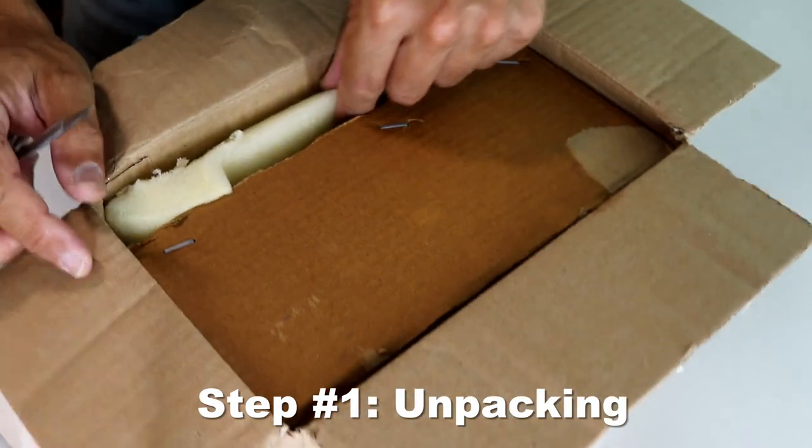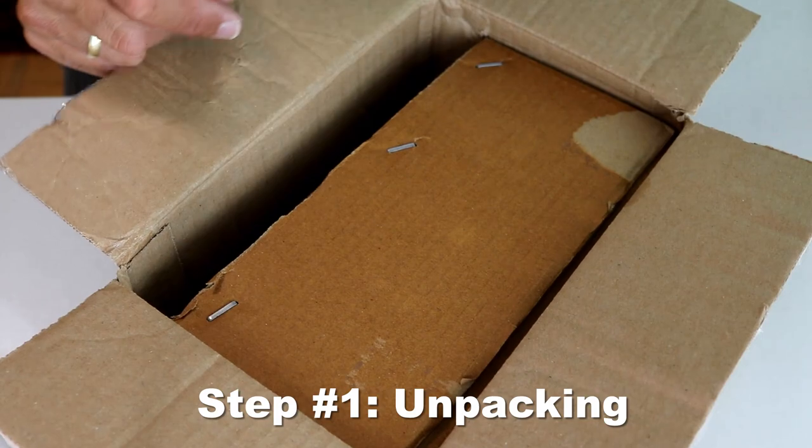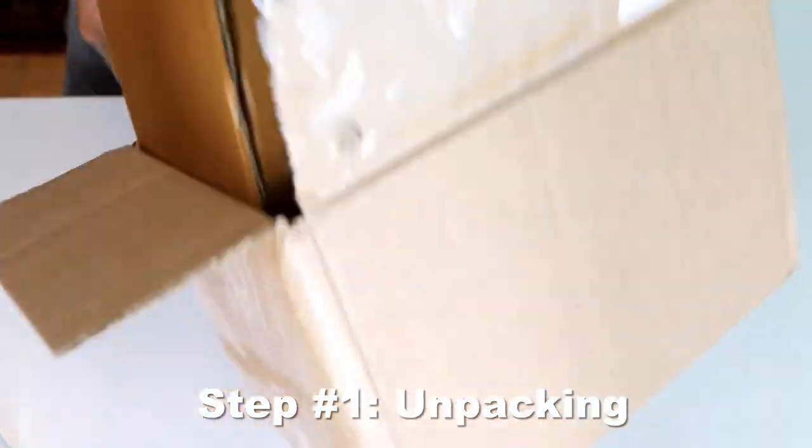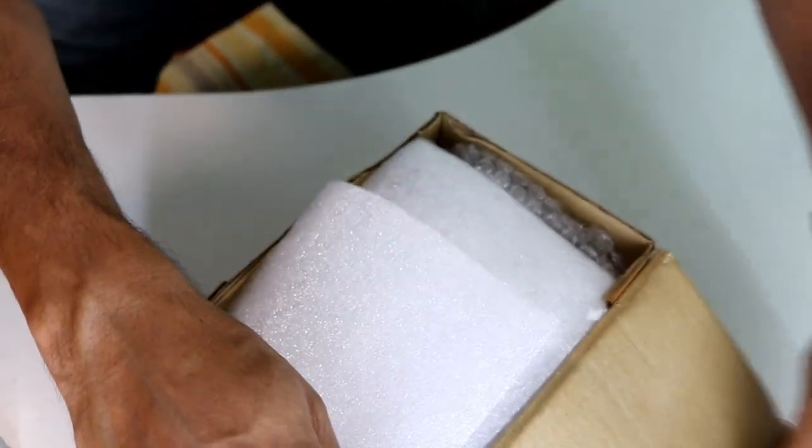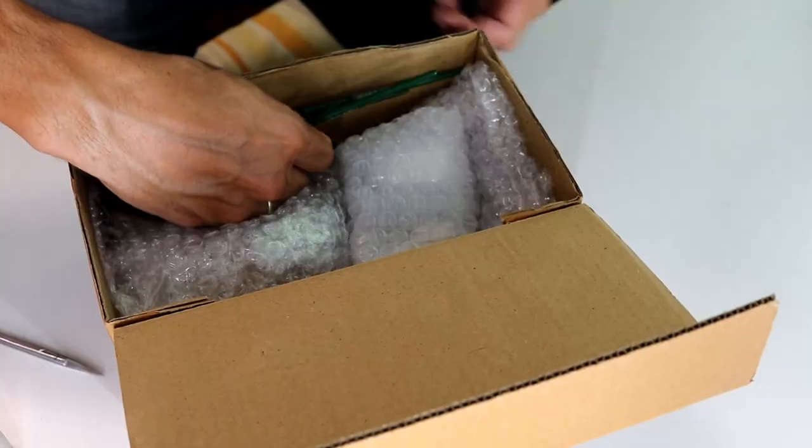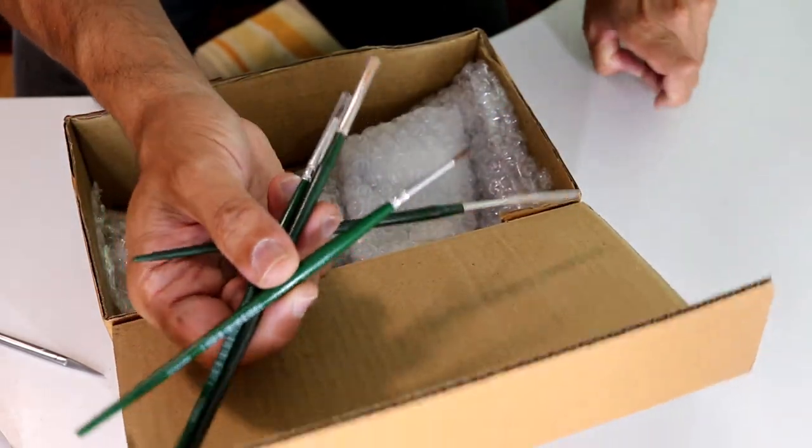I'm now unboxing the thing that I ordered. Inside the box there was another box, and this box was quite heavy, obviously because the slide ringing table is made of solid metal. The first thing that I took out were four brushes, and they are used to apply the ringing paint on the slide.